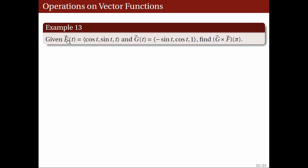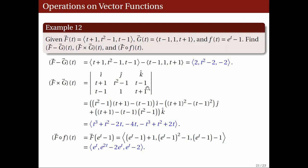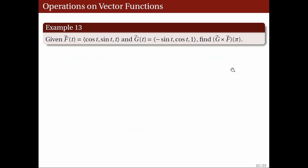Finally, given the vector function F with components cosine t, sine t, and t, and the vector function G with components negative sine t, cosine t, and 1, let's compute G cross F of pi. One way is to compute G cross F of t for any value of t and then evaluate at pi. But as we saw in the previous example, computing the cross product of two vector functions can involve tedious computation. Instead, we'll evaluate G of pi and F of pi first, and then take the cross product.